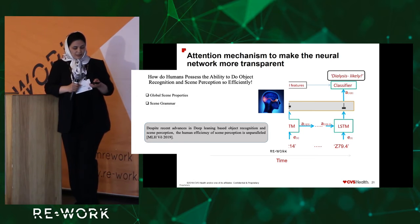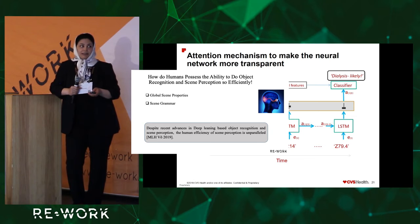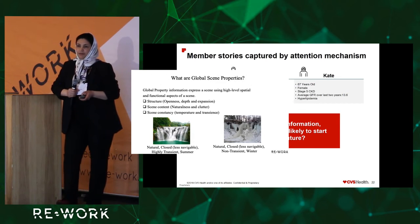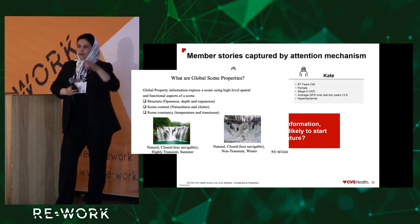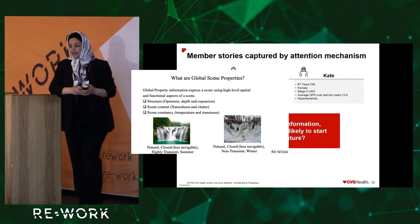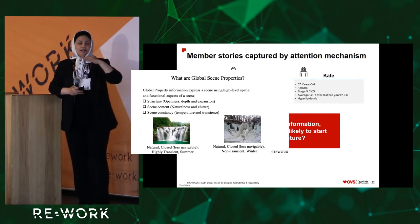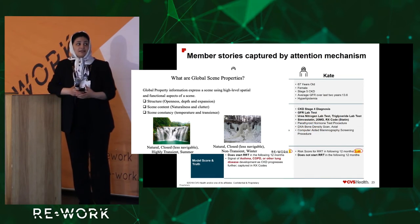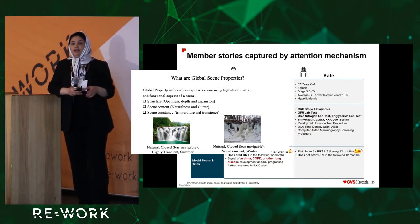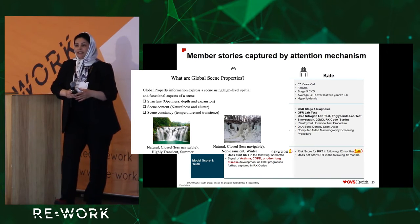The two techniques humans use are extracting global scene properties and scene grammar. Regarding global scene properties: when working with deep learning networks, we usually focus on basic level categorization — for example, saying this picture shows a waterfall. On the other hand, we can have global properties or superordinate level categorization, which expresses a scene using high-level spatial and functional aspects, such as structure, content, temperature, transience, navigability, and whether it is natural or man-made.